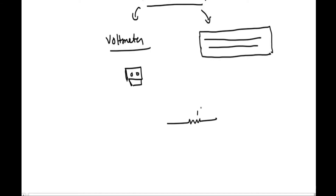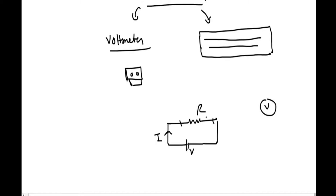Say I have a resistance connected to a battery of V volts, and current I is flowing in this circuit. I want to calculate the potential difference at the terminals of the resistance, which should obviously be V. We expect to get potential V when we connect the voltmeter across its ends, but this never happens — we do not get the actual potential across this point.